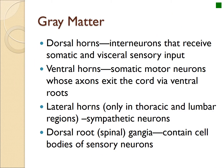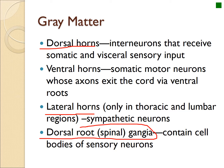The gray matter is divided into two horns, and this is where you find the control center of the central nervous system within the vertebral column. Then you have the dorsal root — a bunch of nerve cells containing sensory bodies.